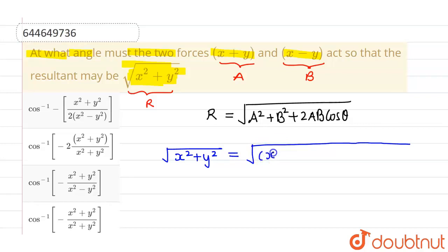This will be (x+y)² plus (x-y)² plus 2 times (x+y)(x-y) which can be written as 2(x²-y²) cos θ.